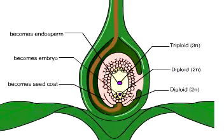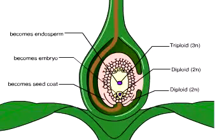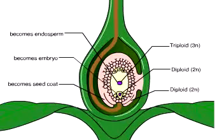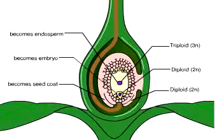The embryo is a young plant that grows from the zygote, while the large central cell grows into food-storing endosperm. All this is enclosed within a protective seed coat that grows from the integuments around the ovule.